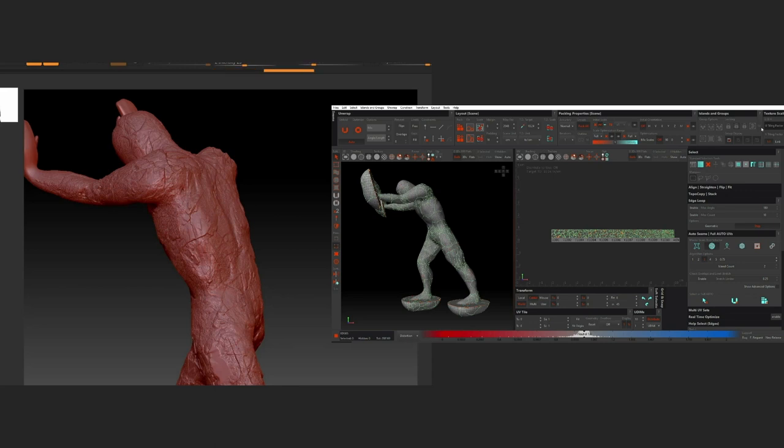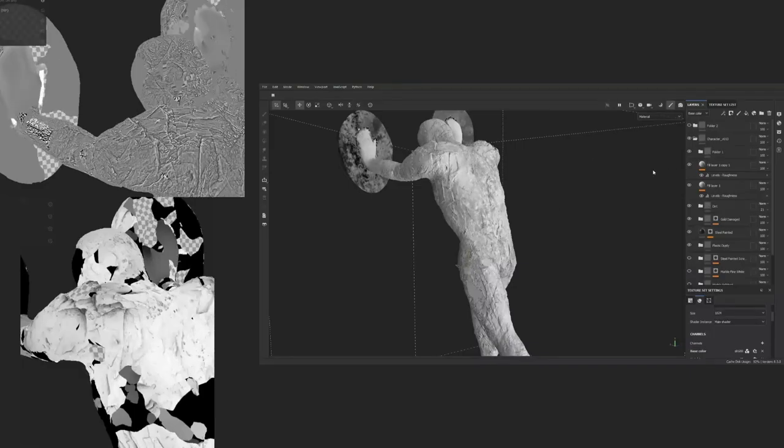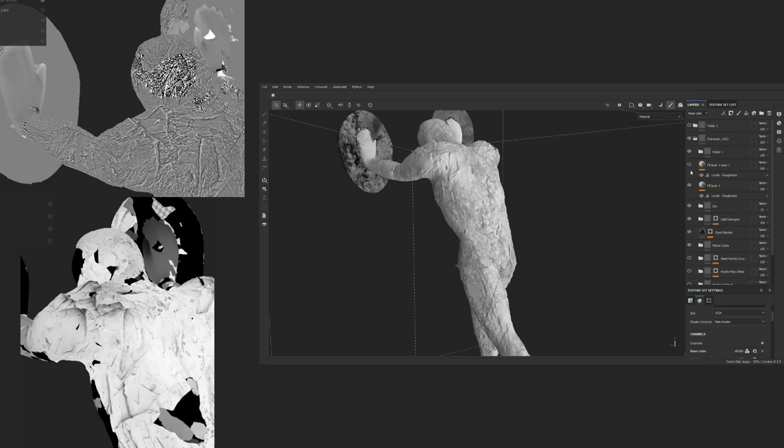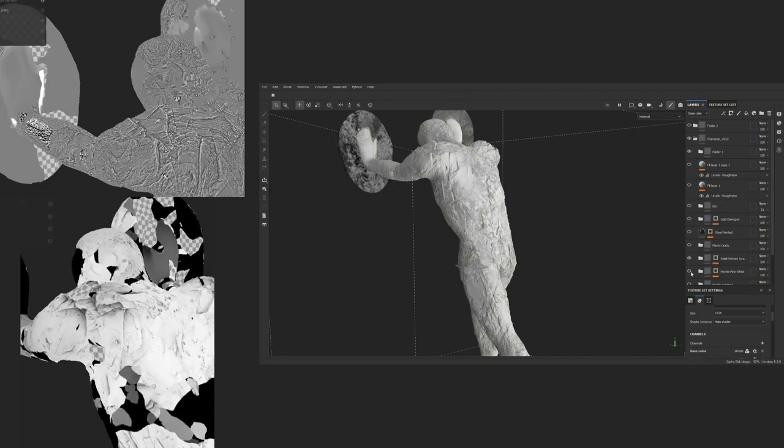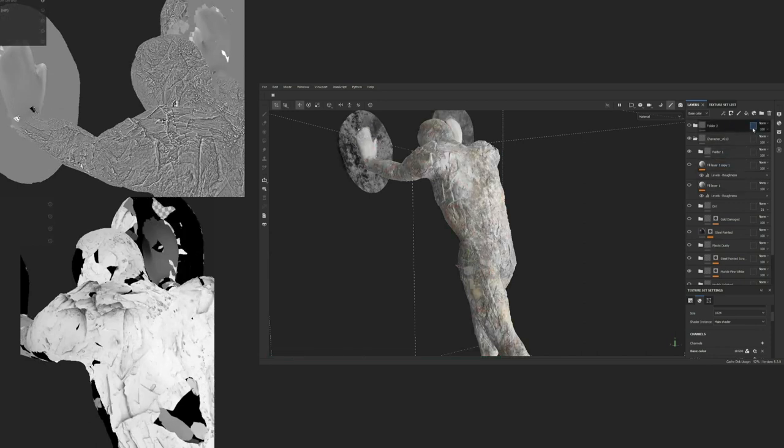So we spread the UVs across UDIMs, 10 UDIMs, and then when we brought it into Substance, we would just have a specific mesh that didn't have any of the interior fractures and bake all the ZBrush high-detail sculpt details back onto that sculpt.